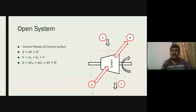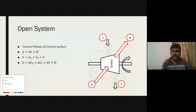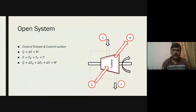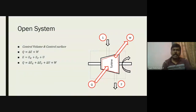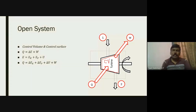In an open system you have a precise control volume — the boundary is fixed and is not going to change. The boundary may be imaginary at the inlet and exit, where there is a hole for entry and exit of mass, but the boundary itself does not move. The example shown is a turbine — the control volume of the turbine remains the same.